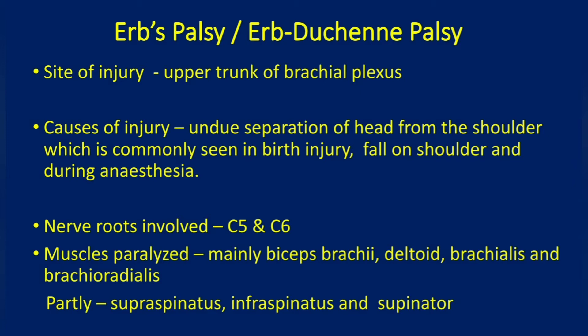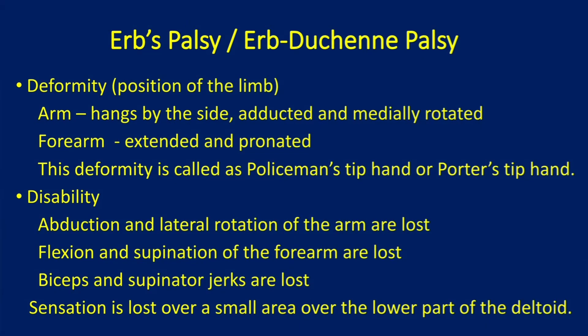Muscles paralyzed are mainly biceps brachii, deltoid, brachialis, and brachioradialis, and partly supraspinatus, infraspinatus, and supinator. The deformity or position of the limb: the arm hangs by the side, adducted and medially rotated; the forearm is extended and pronated. This deformity is called policeman's tip hand or porter's tip hand.